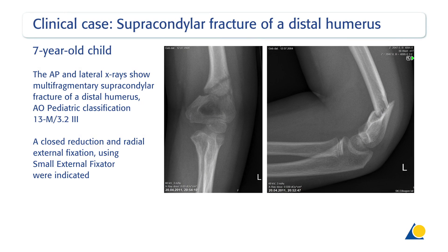In this case, a 7-year-old child fell from a tree. The AP and lateral x-rays show a multifragmentary supracondylar fracture of the distal humerus, AO-Paediatric classification 13-M-3.2-3. This unstable fracture could not be managed using a K-wire fixation technique. A closed reduction and radial external fixation using the small external fixator were indicated.